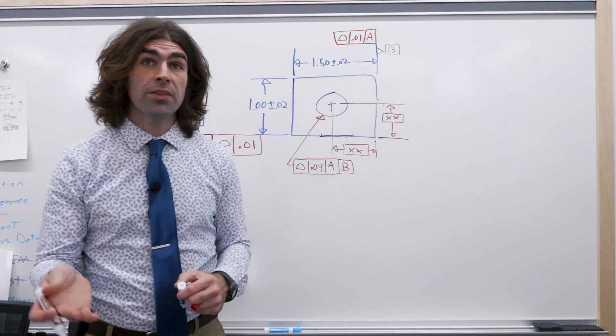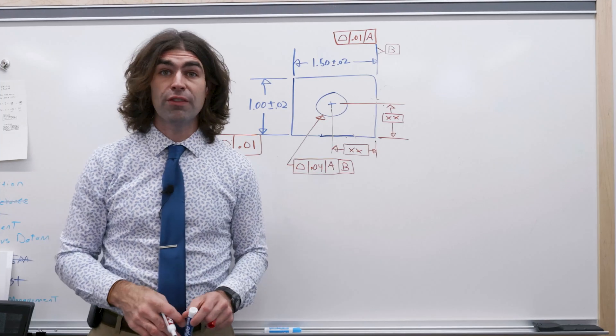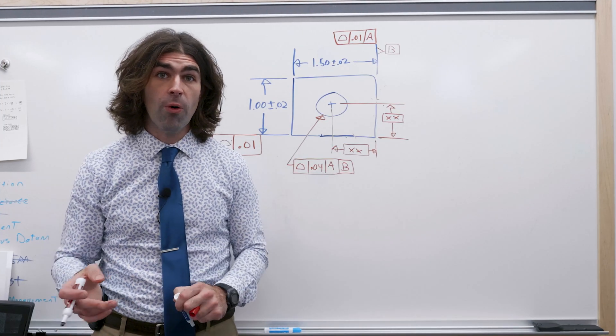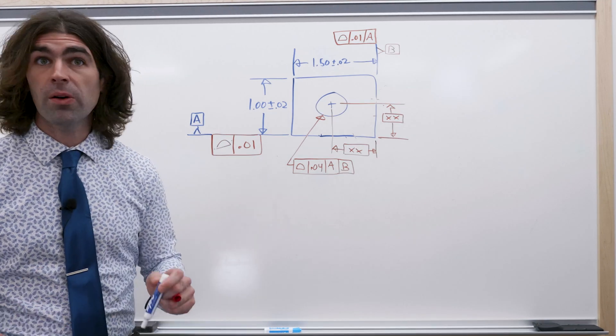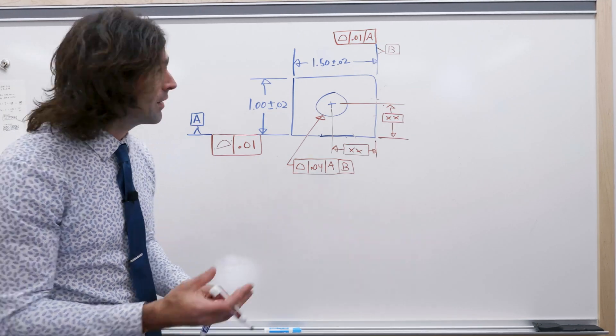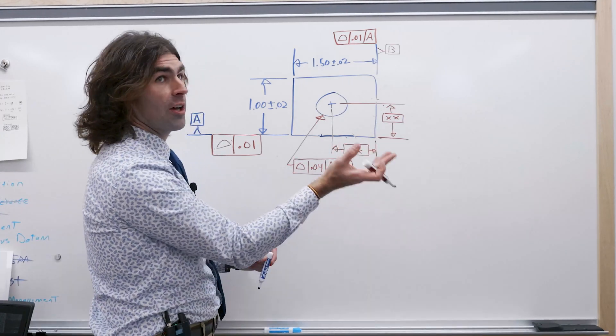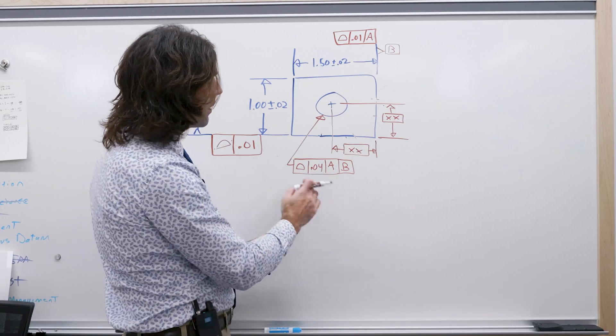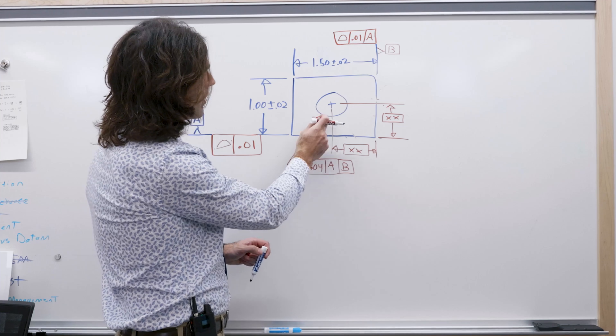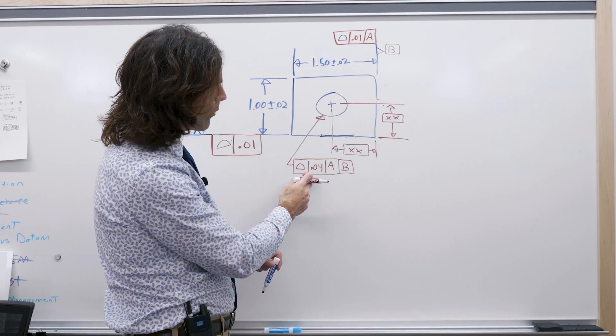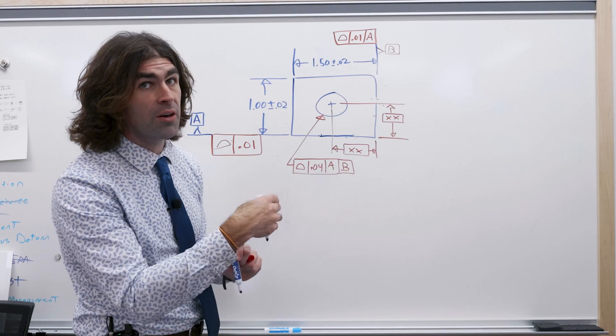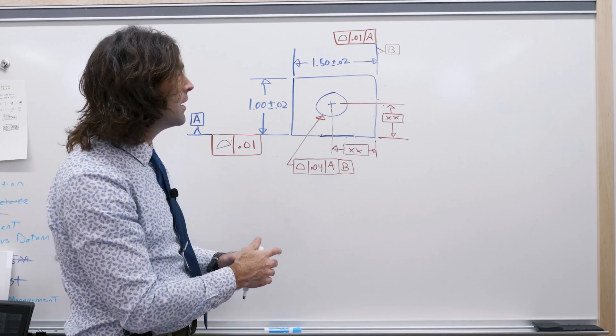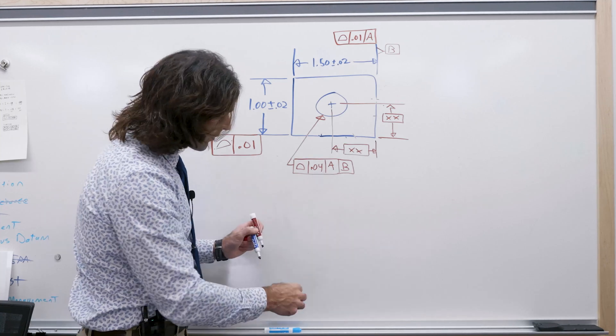Where you'll raise eyebrows with profile is if you use it to dimension a round hole. Okay, so this is totally fine according to the standard. This part could be made and inspected. We've got basic dimensions that come from datums, really important. We've got a profile pointed to the outside of the circle, 40 thousandths to A and B, and our two-dimensional drawing here that fully locates it.